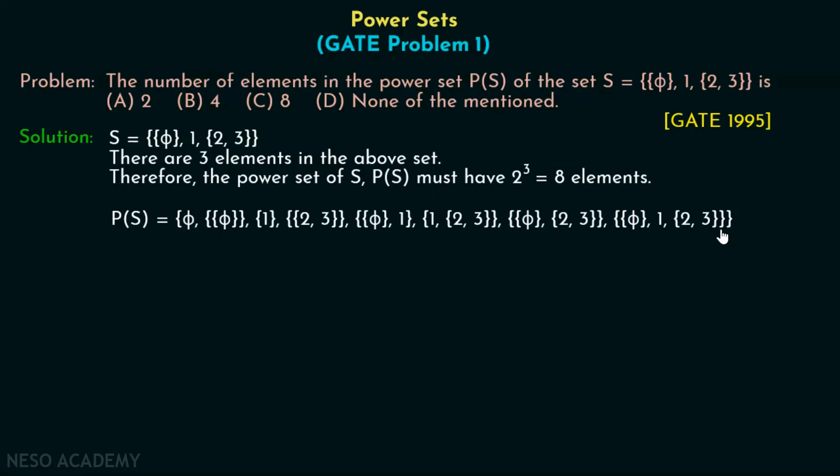If we count the number of elements in this set, then it is clear that there are total 8 elements in this set: 1, 2, 3, 4, 5, 6, 7, and 8. So option C is obviously the correct option.